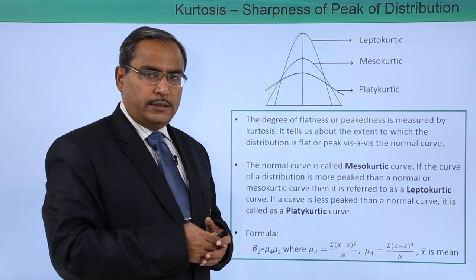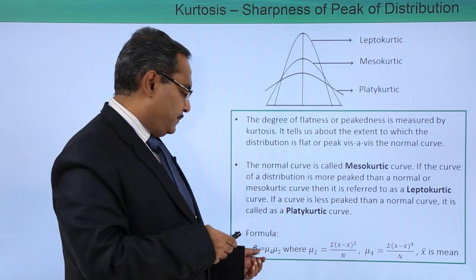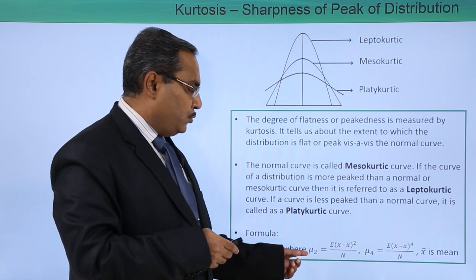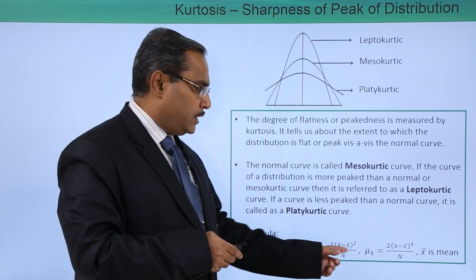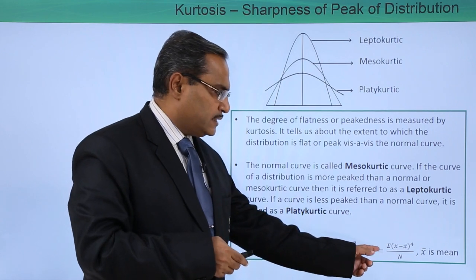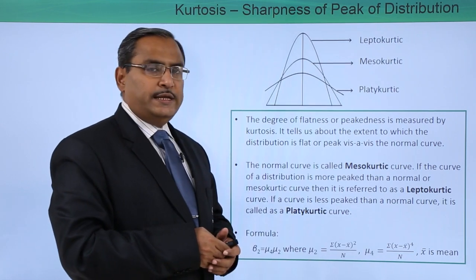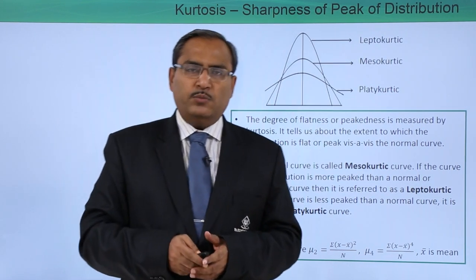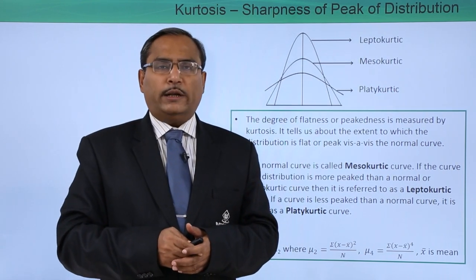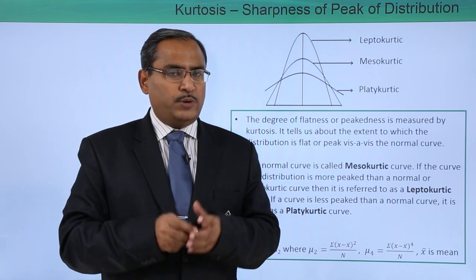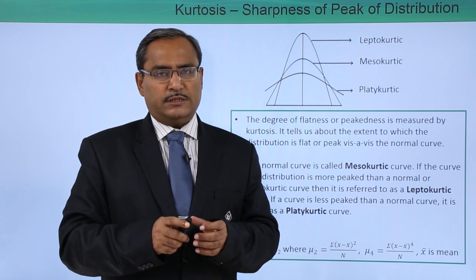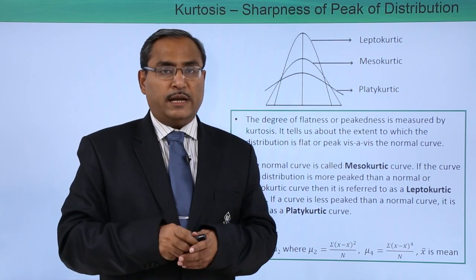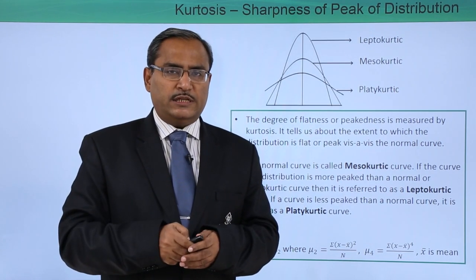Now, how do we calculate kurtosis? It is calculated as μ₄ divided by μ₂ squared, where μ₂ and μ₄ are the second and fourth central moments respectively, and x-bar denotes the mean of the dataset. In this way, we have discussed in this video what kurtosis and skewness are — we have defined both with demonstrations and examples. Thanks for watching this video.